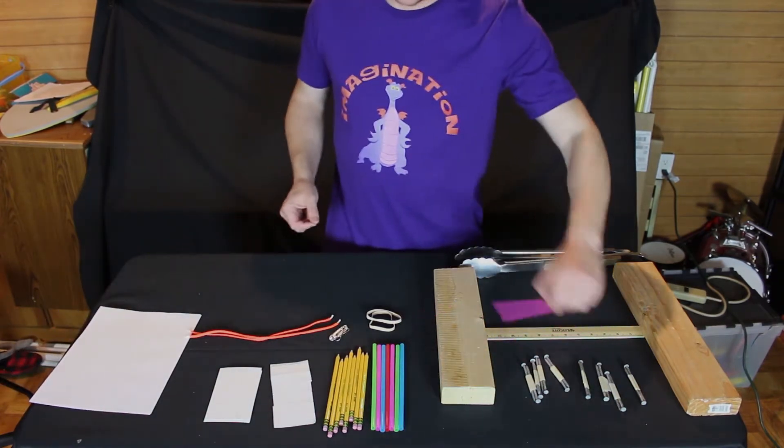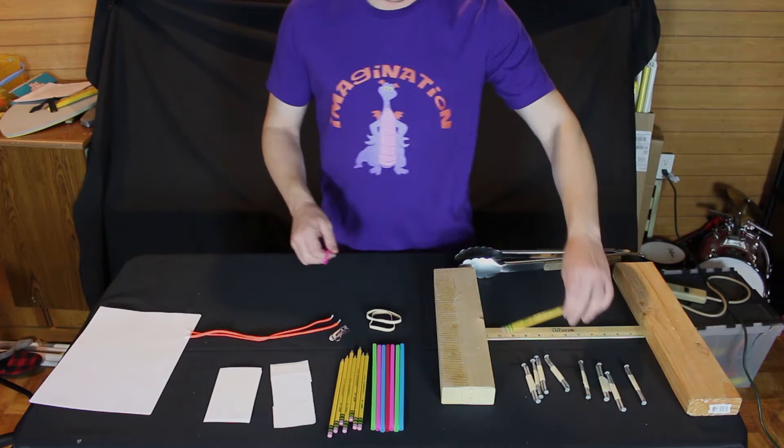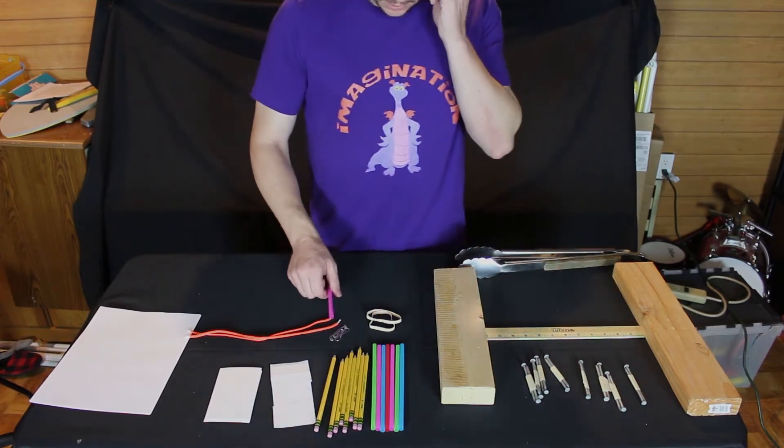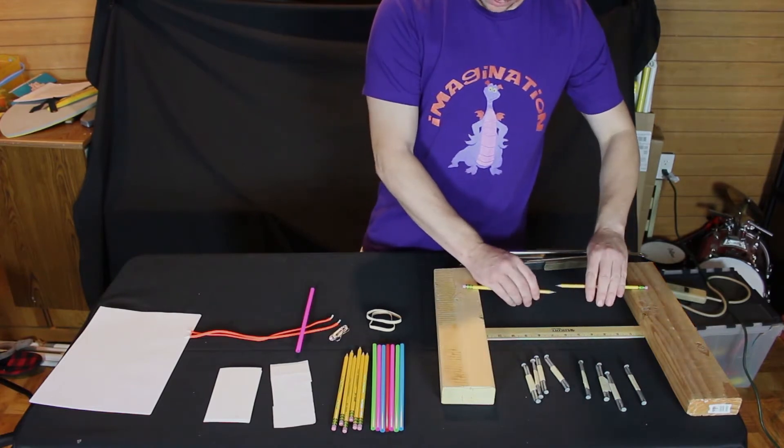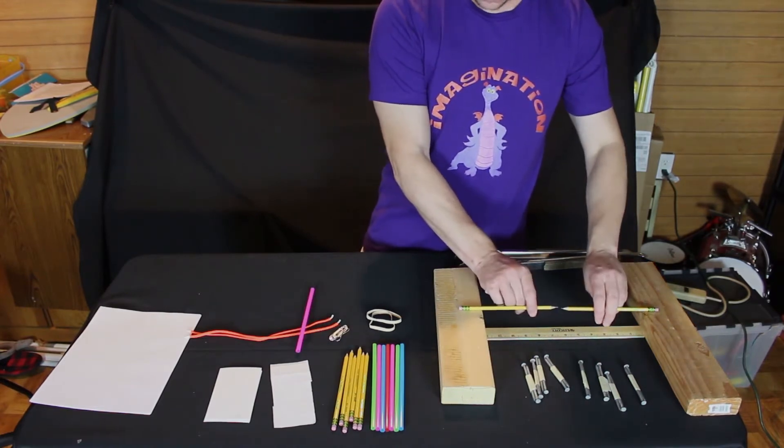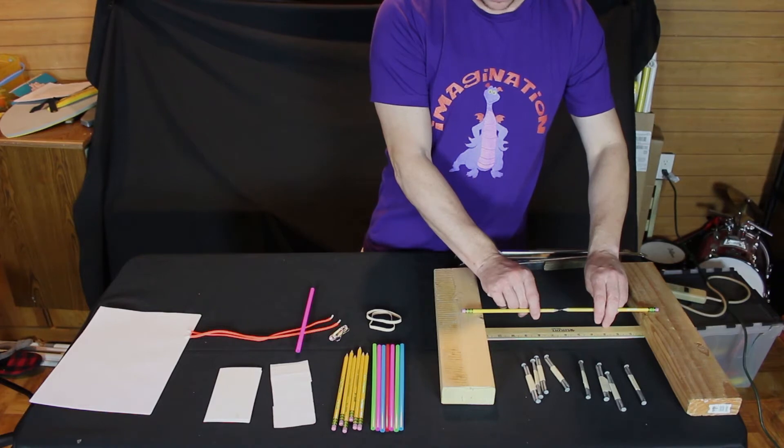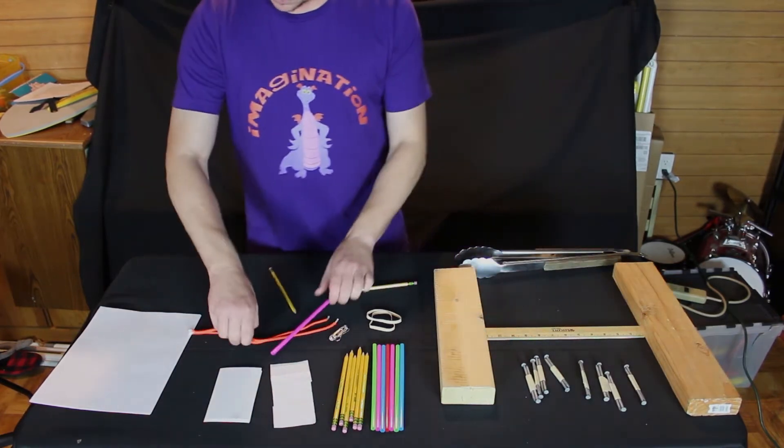What do we have? We have straws that don't go that far, pencils that don't go that far. What about two pencils? Two pencils looks like it'd be just about perfect. So let's put some pencils together.